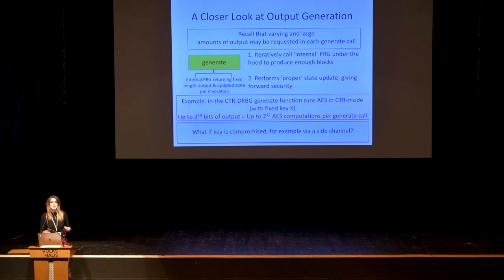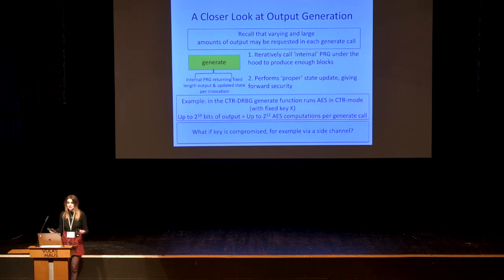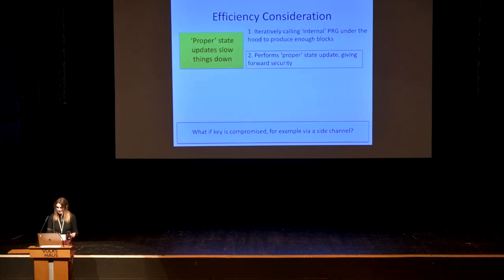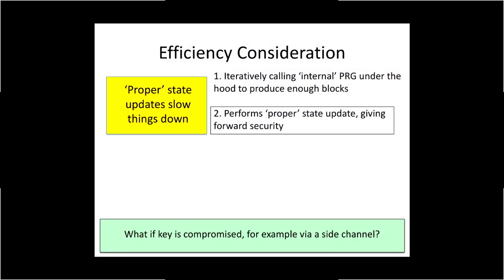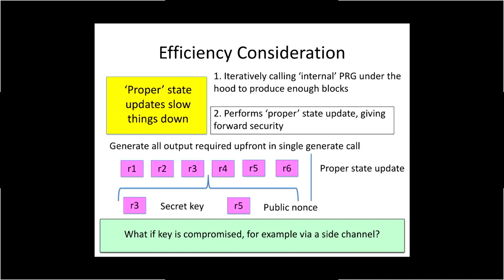This raises the question: what if there's something like a side channel and the key used in this iterative process is compromised? There's also an efficiency consideration, in that these proper state updates slow things down — a similar observation to that made by Dan Bernstein in a concurrent blog post about the counter-DRBG. In light of this, what emerges as an appealing efficiency choice is to generate all the output required for your application up front in a single generate call, with some output used for secret values such as keys and other output used for public values like nonces.